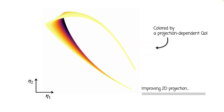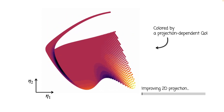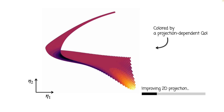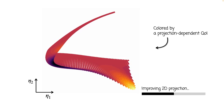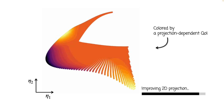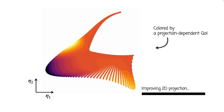I will show you one more training example where I'm optimizing a two-dimensional projection of a much higher-dimensional dataset. In this case, I also colored the projection by a quantity of interest that is projection-dependent. Therefore, you see that the color variable changes as the projection topology is changing. Notice that at the beginning, the projection exhibits a fold in which values of the QoI would become non-unique. But at this point, this projection-dependent QoI becomes uniquely represented over the projection.